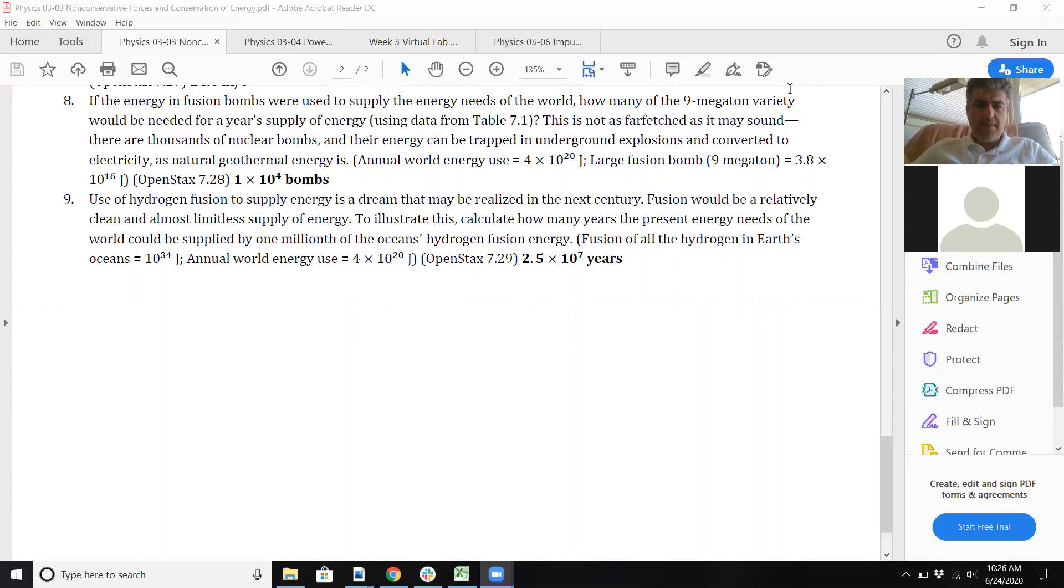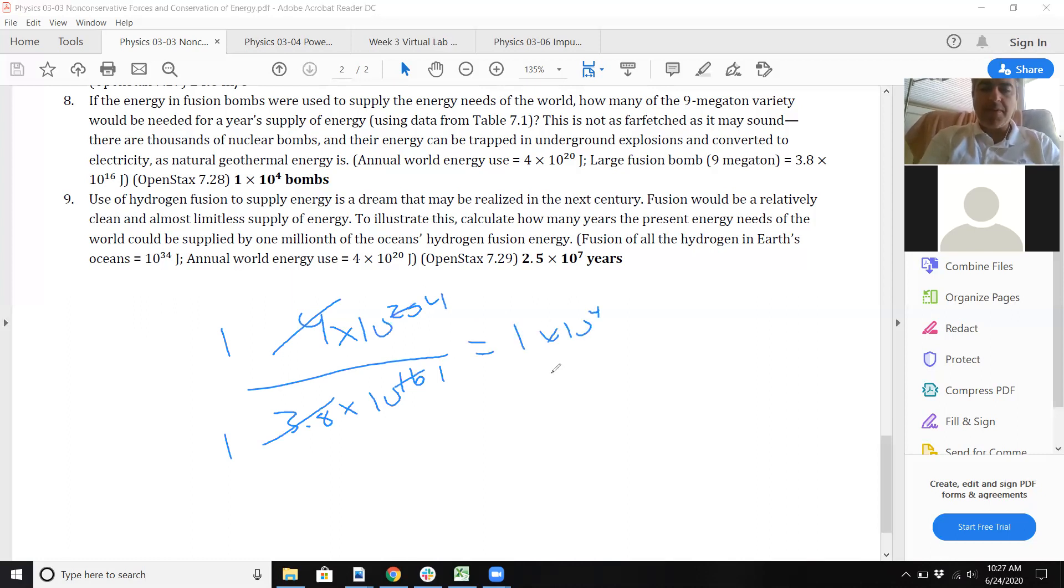Actually, we don't need to look at the table because that's pretty easy. You're just doing 4×10²⁰ or 3.8×10¹⁶. Basically, you're trying to figure out how many bombs you need to equal the energy use of the world. These are close enough because it's roughly 1×10⁴, or 10,000 nuclear warheads would supply the energy we need for a year.